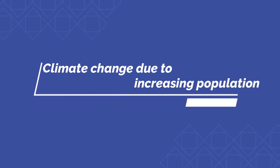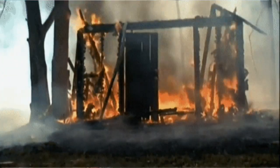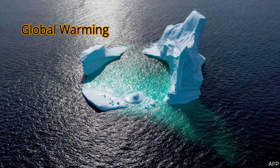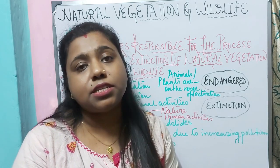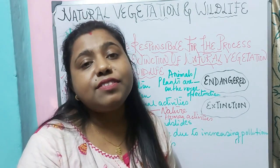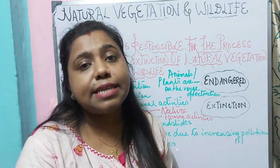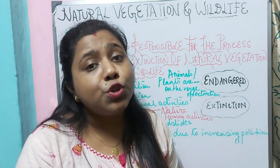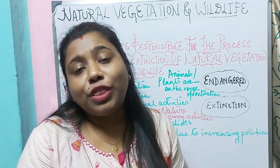The next factor responsible for extinction of natural vegetation and wildlife is climatic change. Due to the increase in carbon dioxide emissions, pollution is rising and temperatures are changing. Global warming is a major concern. Due to climatic change, the breeding and feeding patterns of animals are changing, the life cycles of plants and animals are getting affected, and the rise in temperature is leading to melting of snow in the polar regions. Some plants are now growing early and blooming in spring, surviving longer into the fall.